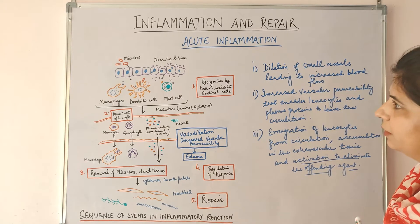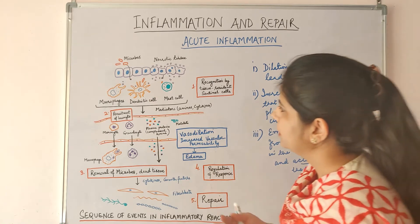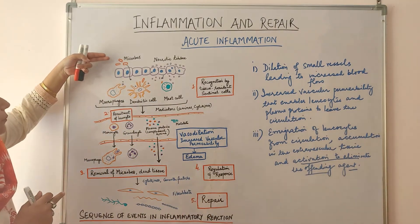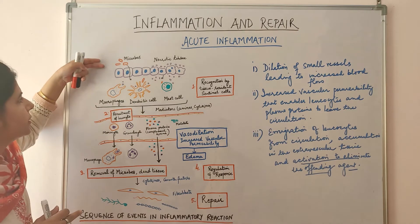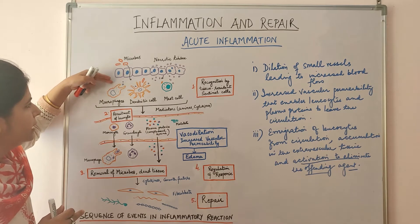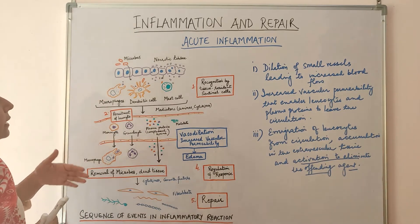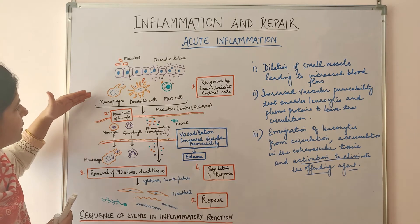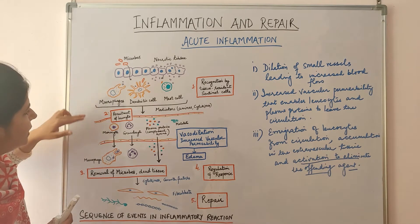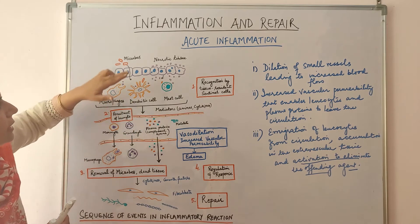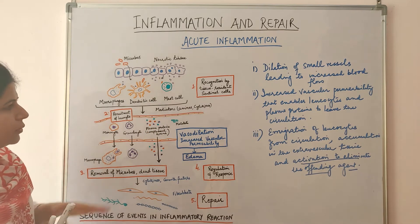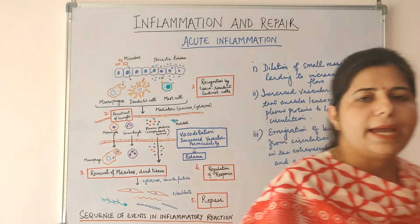Whenever an individual encounters injurious stimuli in the form of microbes, the tissue resident macrophages try to eliminate them and they identify various microbial products and toxins — they have receptors to identify these agents. When these receptors are engaged, there is release of cytokines and chemical mediators which act on the small vessels in the vicinity, bringing about vasodilation and increased vascular permeability.